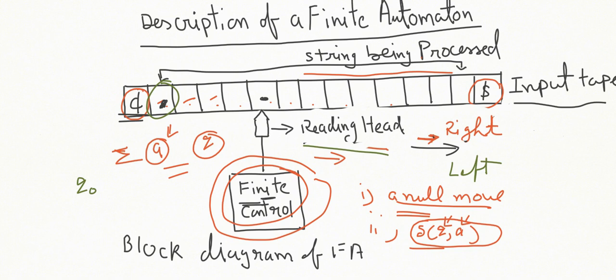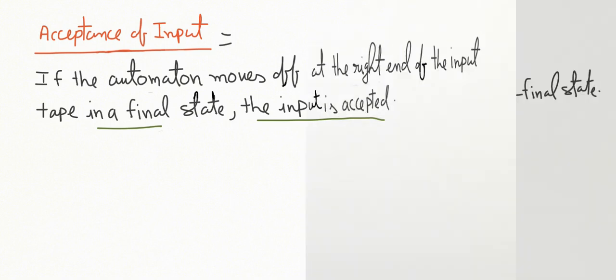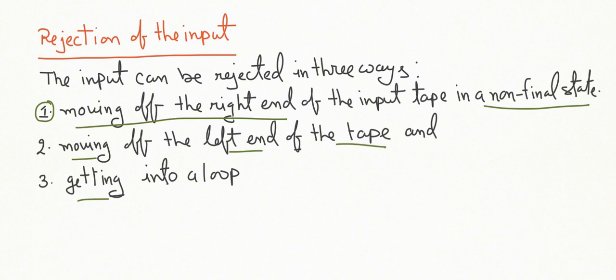Now what is the condition for acceptance of an input? If the automaton moves off the right end of the input tape in a final state, then the input is said to be accepted. That is, after processing all symbols of the string, if you are reaching a final state, then that input is going to be accepted. The input can be rejected in three ways: first, by moving off the right end of the input tape in a non-final state; second, by moving off the left end of the tape; and third, by getting into a loop.